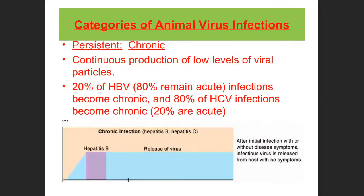Persistent infections continue for many years or even a lifetime and may or may not cause symptoms. Persistent infections can be chronic or latent. Chronic means the virus is active the whole time — viral particles can be detected throughout the years of infection, and damage accumulates slowly, eventually causing patient death. Examples: hepatitis C is chronic about 80% of the time; hepatitis B is acute 80% of the time but chronic 20% of the time depending on patient age and immune status.